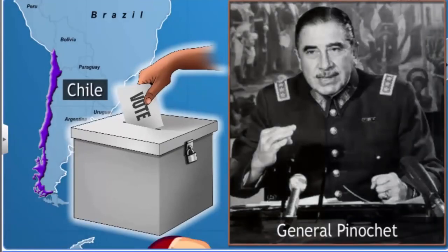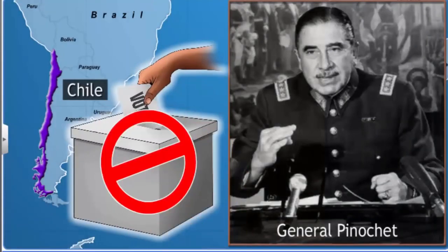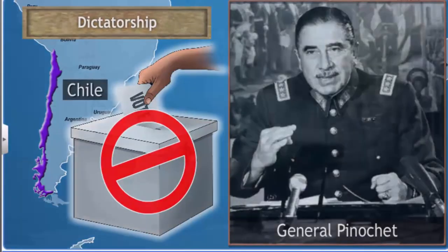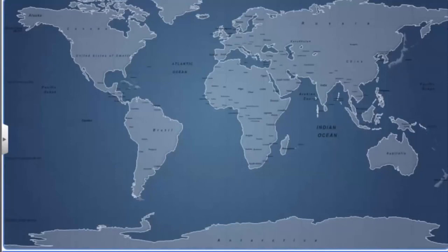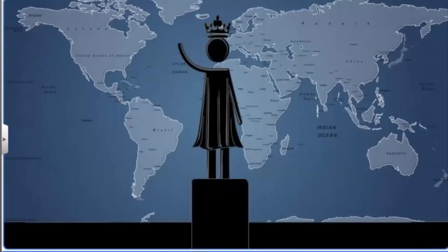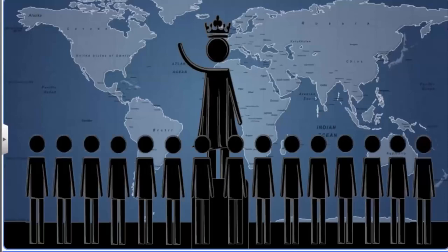General Pinochet, who led the coup in Chile, was also not elected by the people. His rule can be called dictatorship. Some countries are ruled by one person who is wholly set apart from all other members of the state, who are called his subjects. The will of the people has nothing to do with the selection of the ruler.